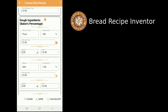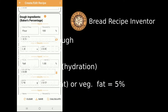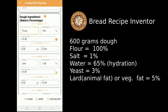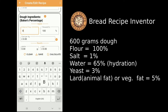Let's go now to the baker's percentage. First is the flour — the flour is always 100 percent. You can indicate here the type of flour you're going to use; in this case I'm going to put in bread flour.